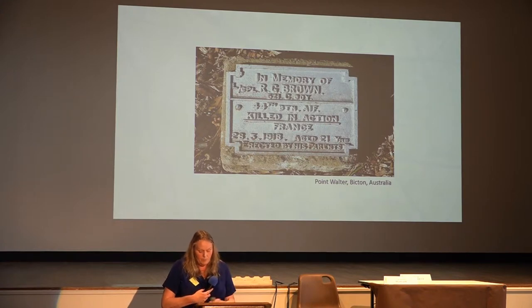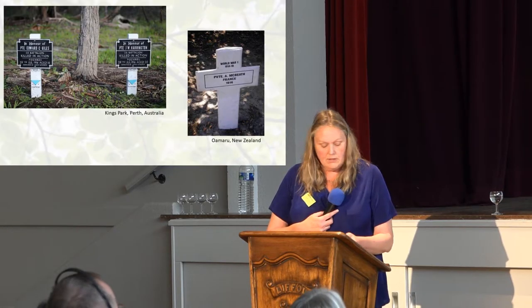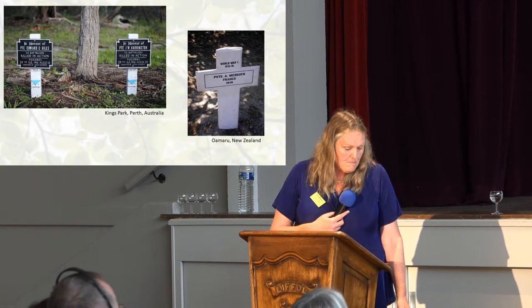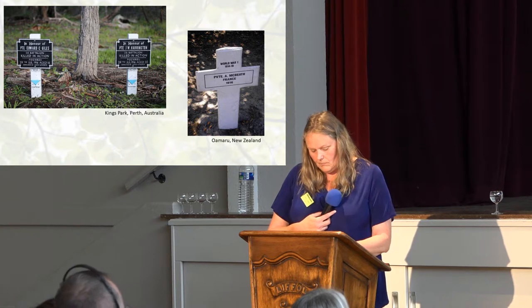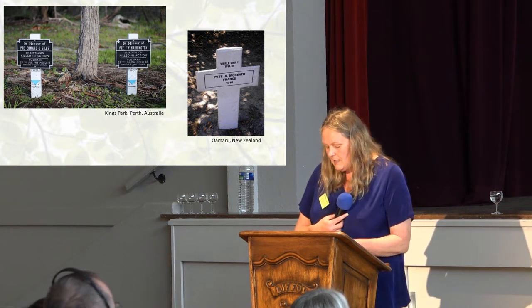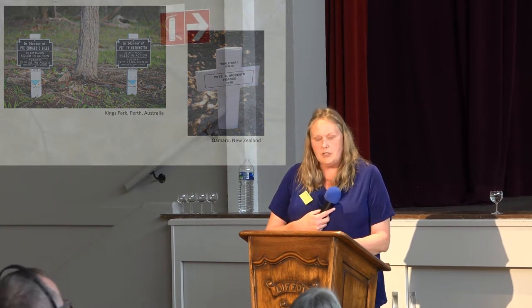Here is a plaque from Point Walter, Bicton, Australia: it shows name, rank, battalion, cause of death, where he died, the date, his age, and who planted the tree. Here are some other examples with varying degrees of information. The more information supplied on a plaque made it easier for the observer to construct an image of the person named and their circumstances. At the same time it was becoming increasingly difficult for people to retain a romanticized, naive image of war and death.